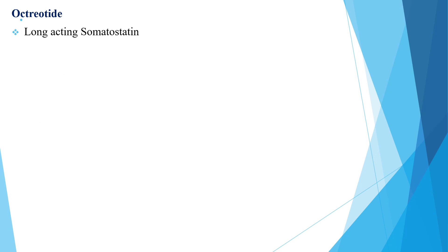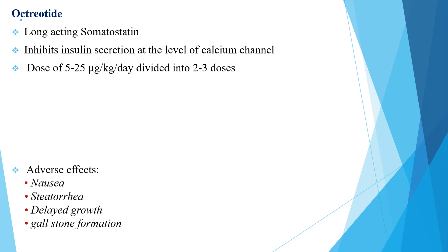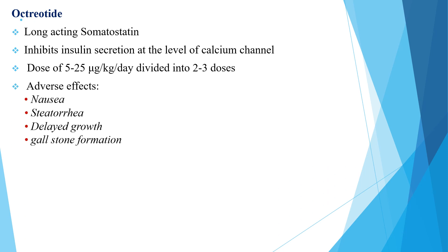Octreotide is a long-acting somatostatin analog that inhibits insulin secretion at the level of calcium channels. The dose of octreotide is 5 to 25 mcg/kg/day divided into 2 to 3 doses. Adverse effects include nausea, steatorrhea, delayed growth, and gallstone formation.